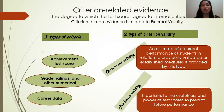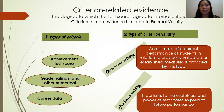A summative test in entrepreneurship can be compared to the periodical test results through correlation. Criterion evidence is of two types: concurrent validity and predictive validity.